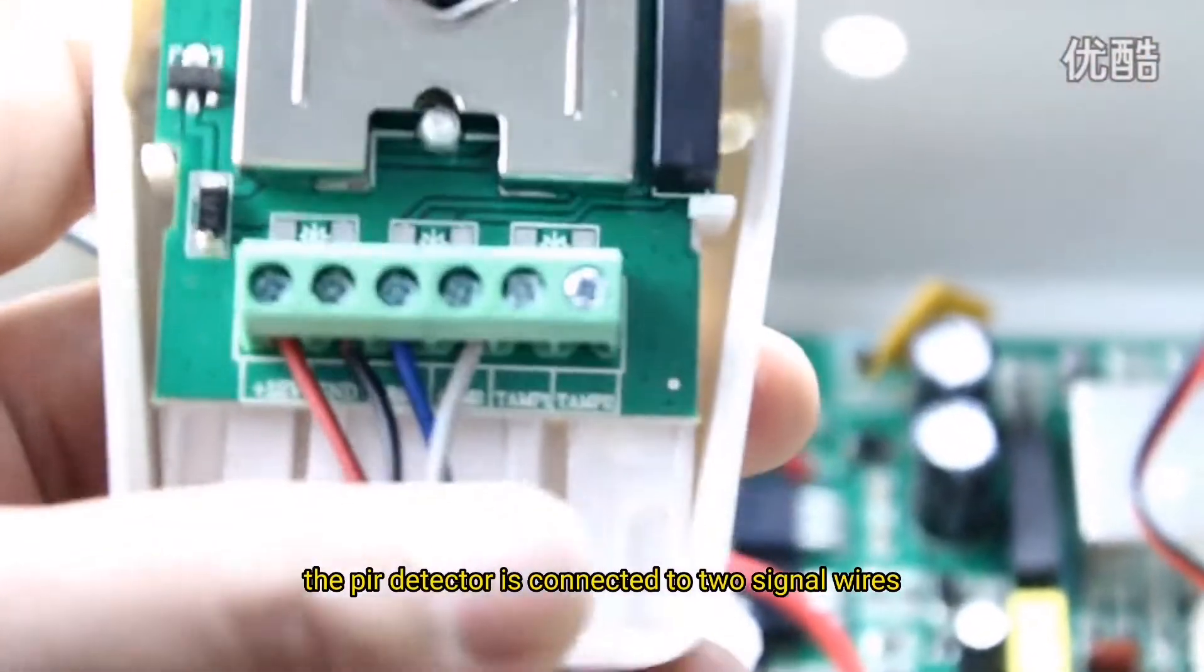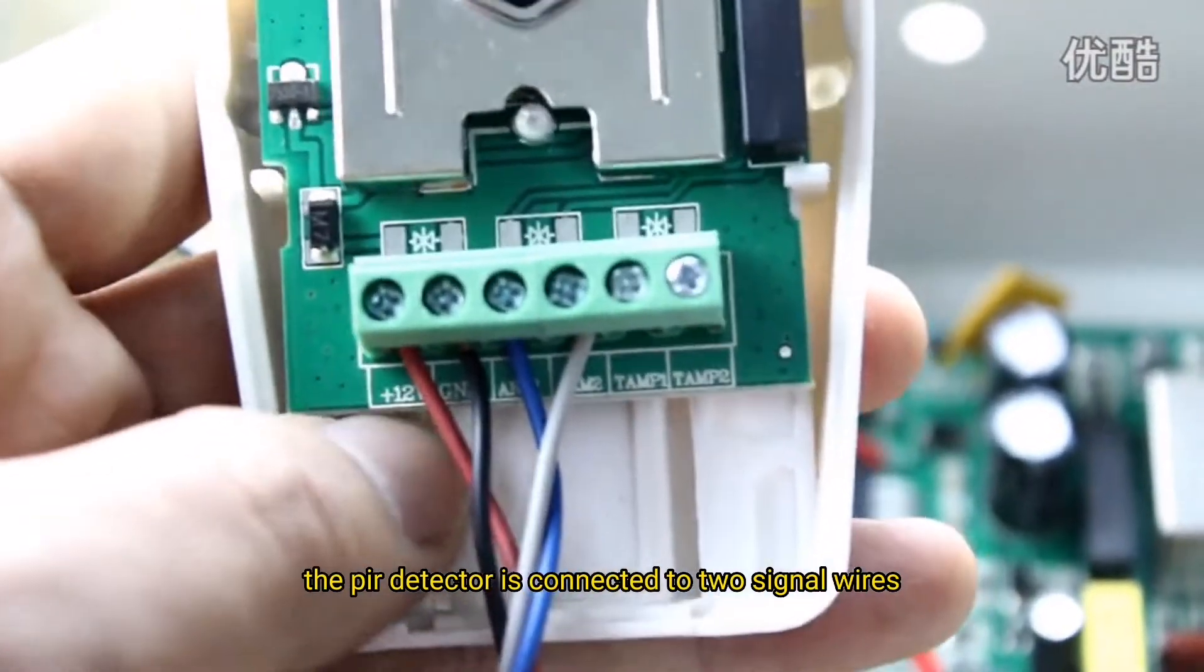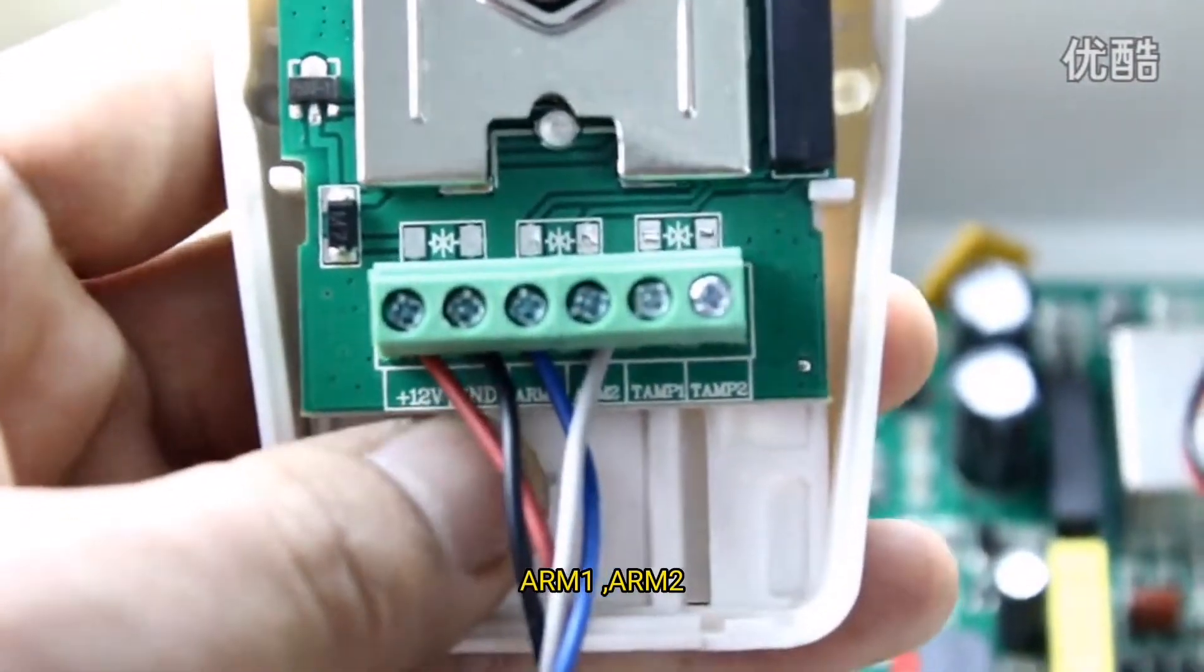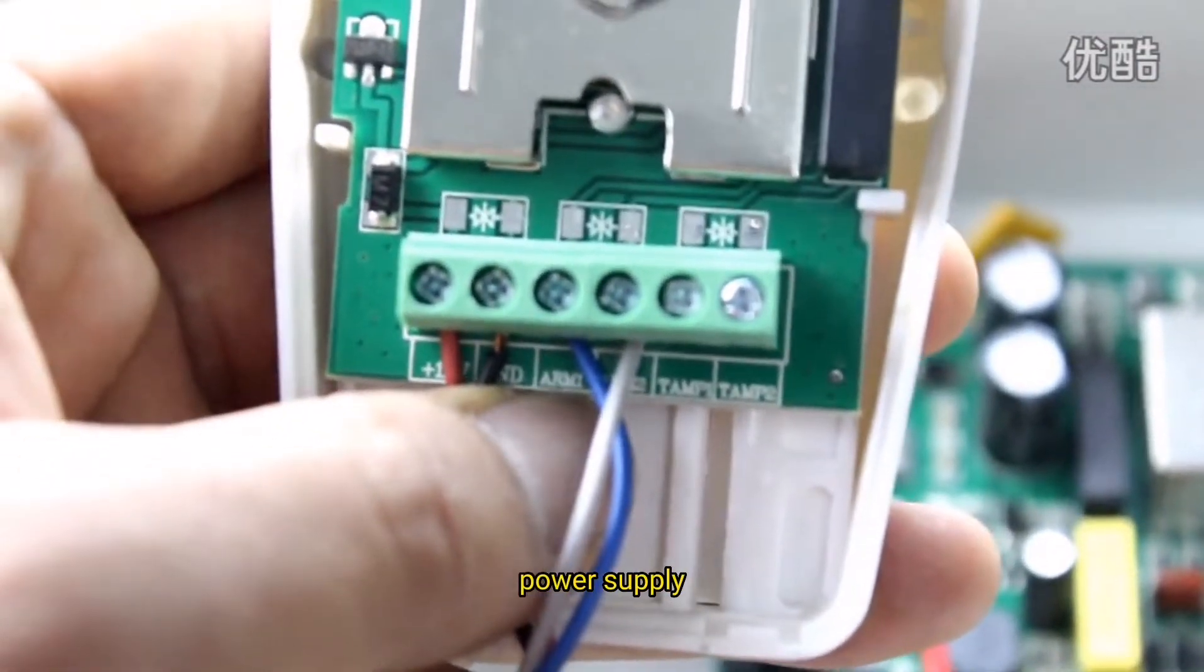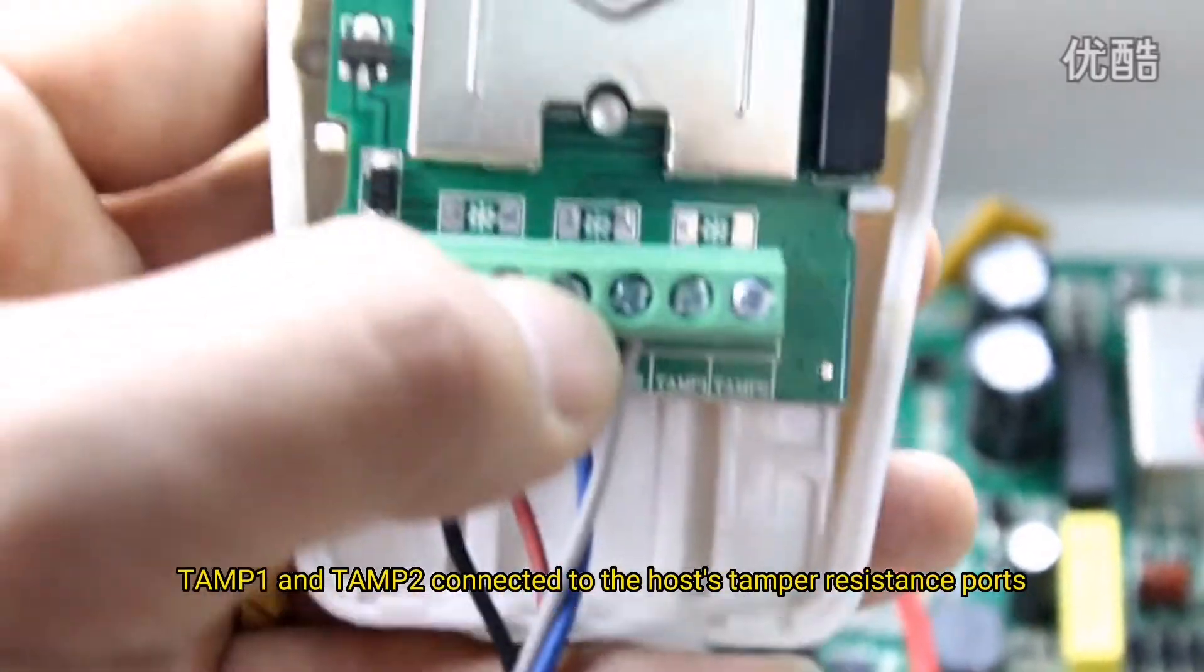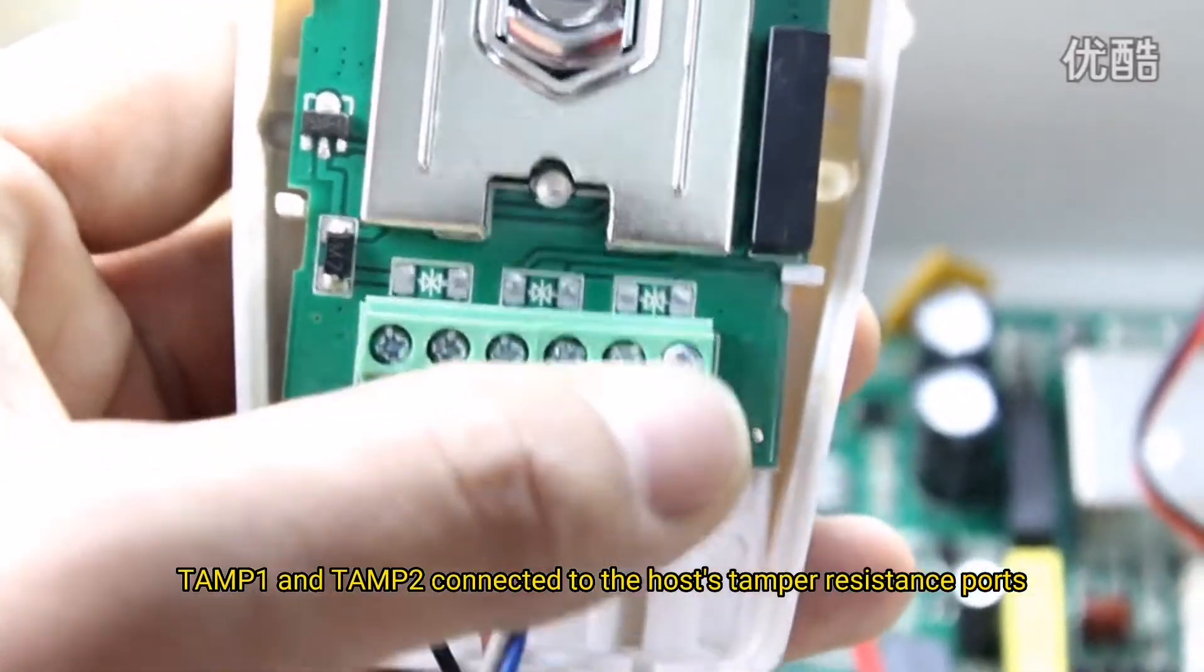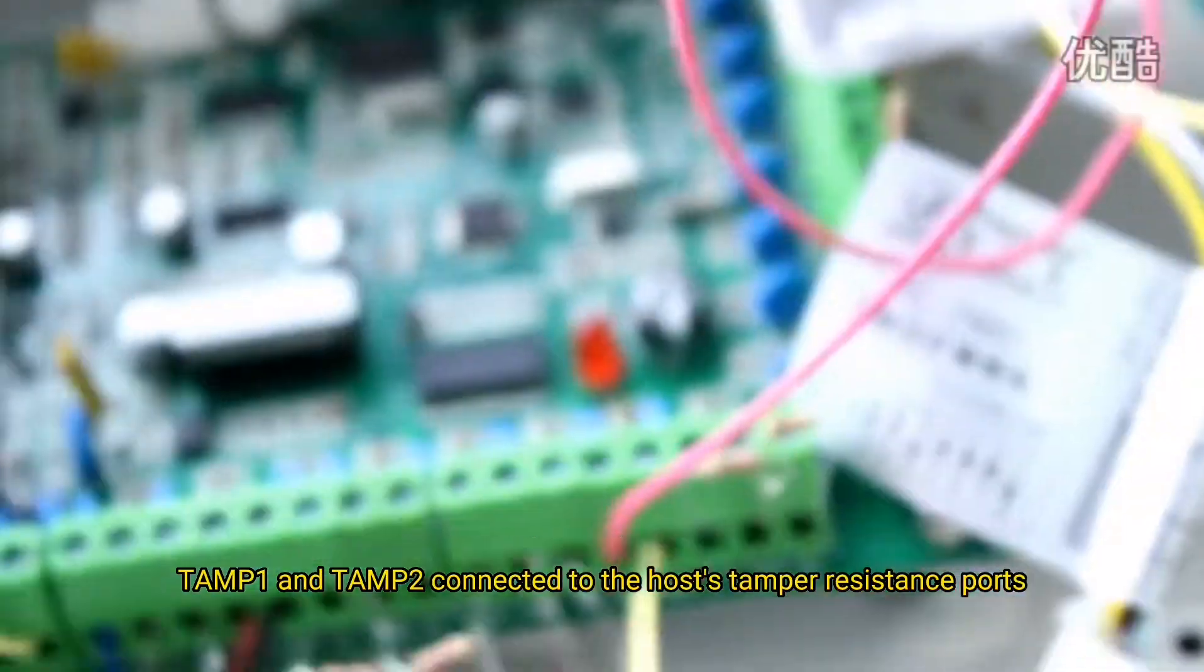The PIR detector is connected to two wire signal wire Arm 1, Arm 2 and power supply, 12 voltage G and GND. Temp 1 and Temp 2 connected to the host temp resistance port.